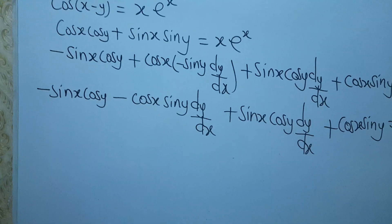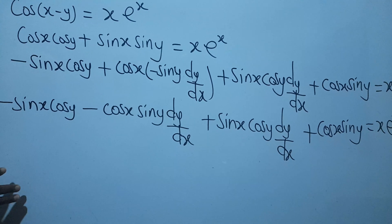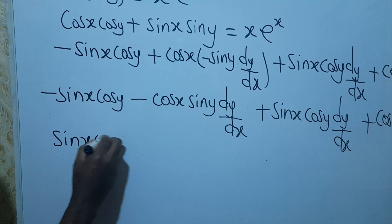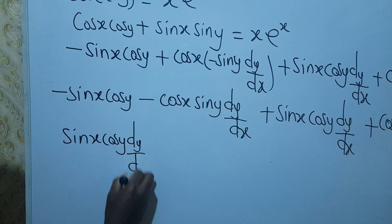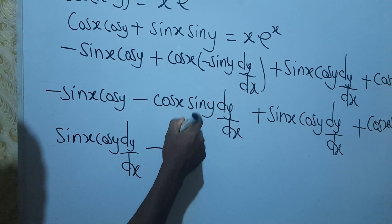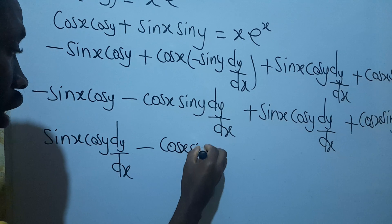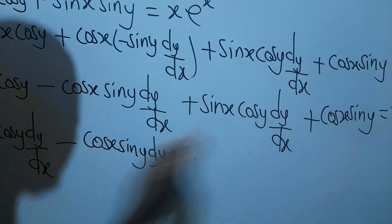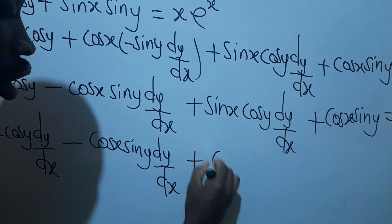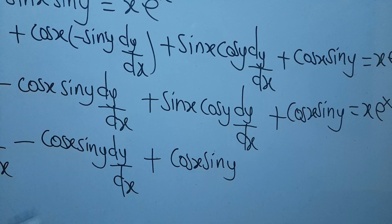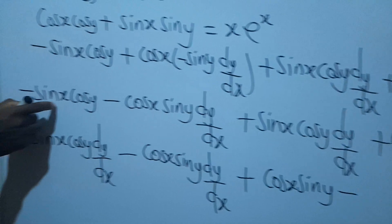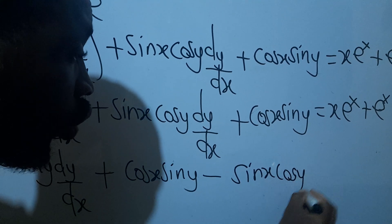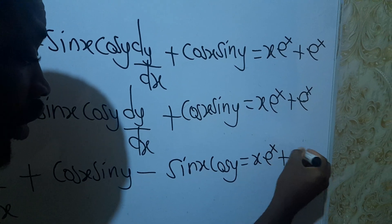Now I group the terms: bringing those with dy/dx to one side, I have cos x·sin y·dy/dx plus sin x·cos y·dy/dx, and the remaining terms cos x·sin y minus sin x·cos y, equal to x·e^x plus e^x.